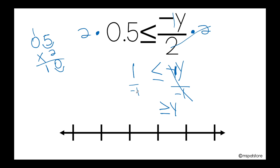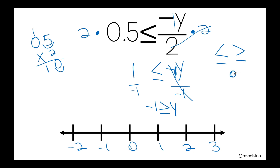1 divided by negative 1 is negative 1, because when you're dividing and they have different signs, your answer will be negative. So I have negative 2, negative 1, 0, positive 1, positive 2, and positive 3. Remember that when I have less than or equal or greater than or equal, I need to use a closed circle. So I'm going to show you the closed circle at negative 1. The solution is saying that y is less than or equal to negative 1. Remember that on the negative side, as they move away from 0, they become smaller and smaller. So negative 2, negative 3, negative 4, and so on meet the criteria — those numbers are less than or equal to negative 1.